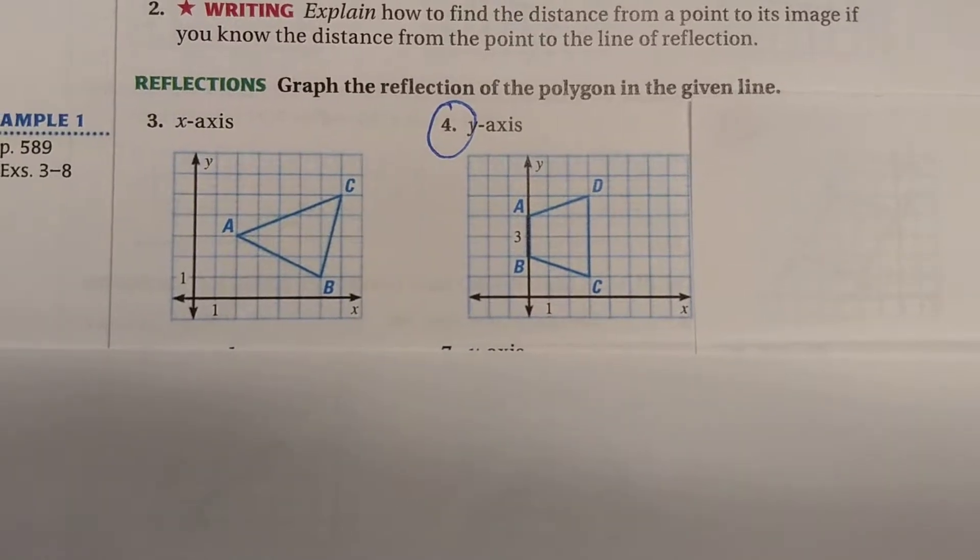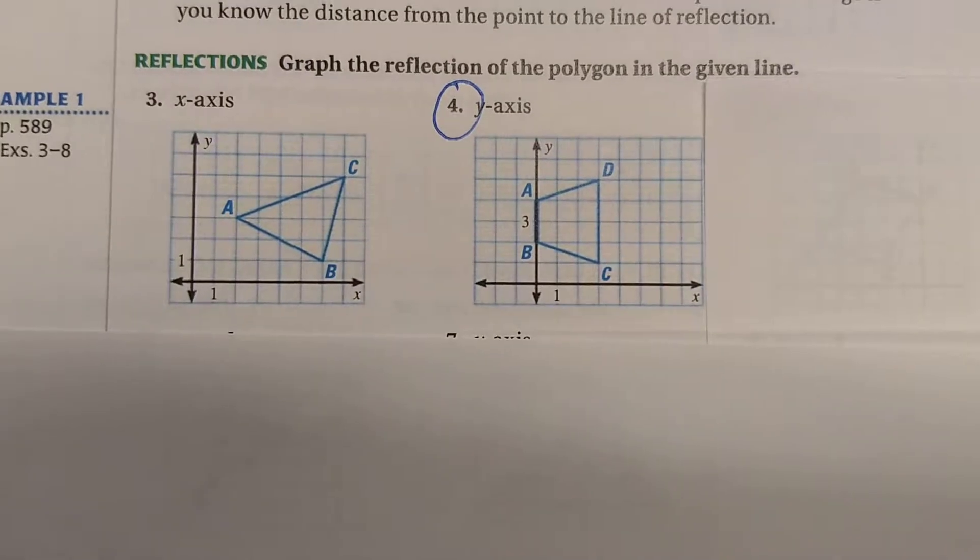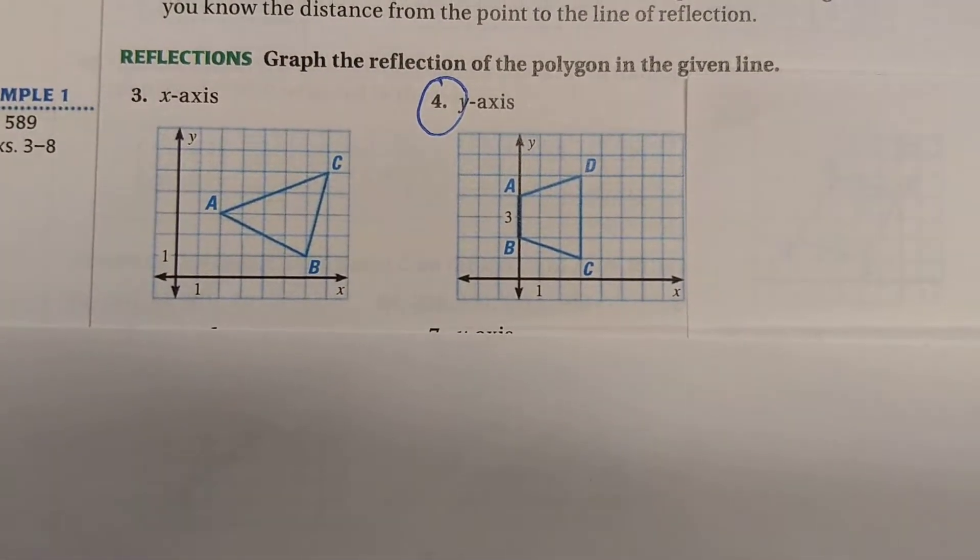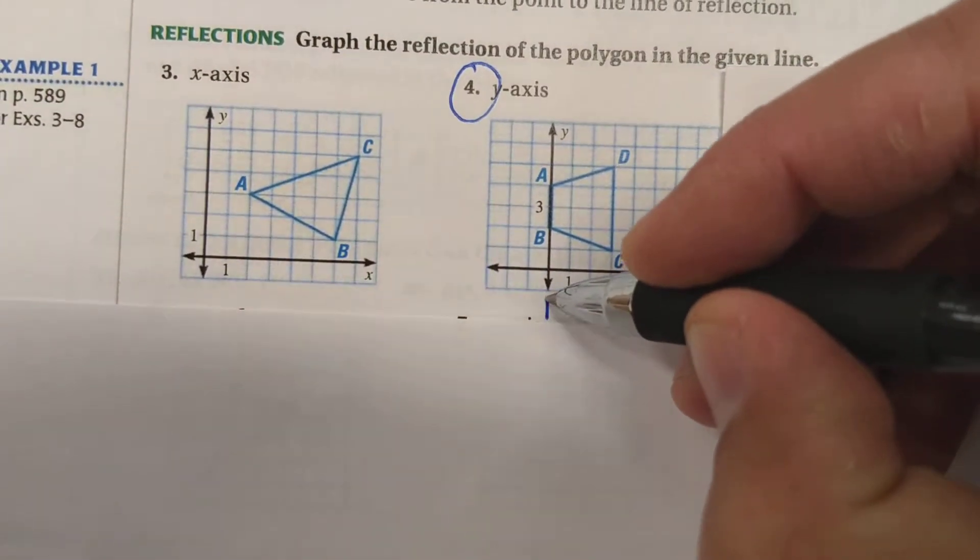Draw a reflection on a coordinate grid. When you do this, the most important thing you have to understand is where your line of reflection is. And number four, it tells us the y-axis is going to act as our line of reflection.